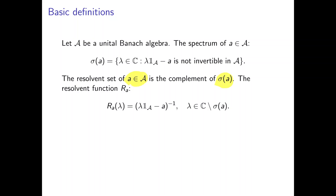Then we have the resolvent function, which we denote by R sub A, which is equal to the inverse of lambda times the unit minus A. This is a well-defined expression for any lambda that is not in the spectrum — that is, for any lambda in the resolvent set. And this is an analytic function, which is going to be important for us later on.